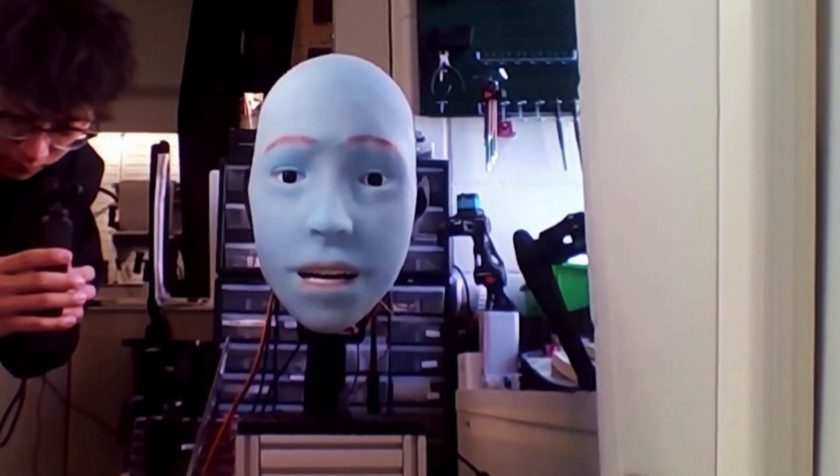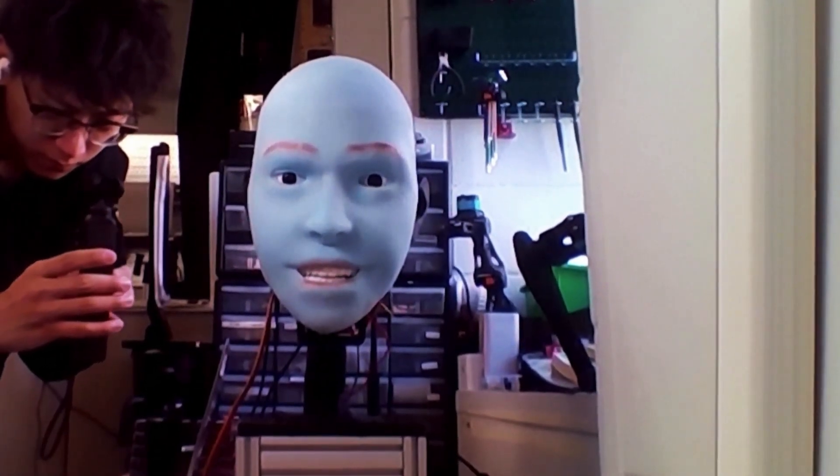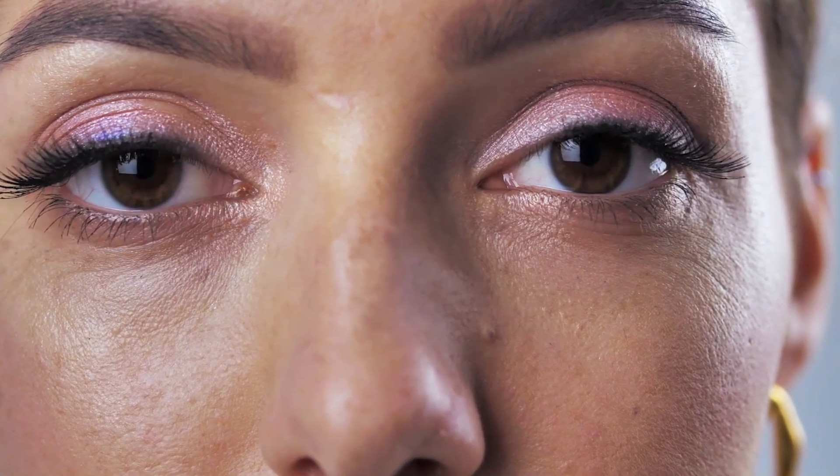By covering a robot with living skin, they're taking a significant step towards creating a more realistic and less unsettling humanoid robot. The skin moves and wrinkles just like human skin, creating more natural and believable facial expressions.